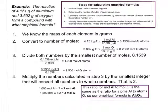Let's do a practice together. Here's our example: the reaction of 4.151 grams of aluminum and 3.692 grams of oxygen forms a compound — what is its empirical formula? Step one: find the mass. We already know it — 4.151 grams of aluminum and 3.692 grams of oxygen. Step two: determine the number of moles of each type of atom by converting grams to moles. We multiply grams of aluminum by the conversion factor, cancel the grams, and get 0.1539 moles of aluminum atoms.